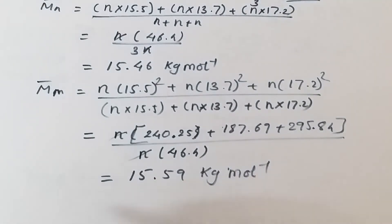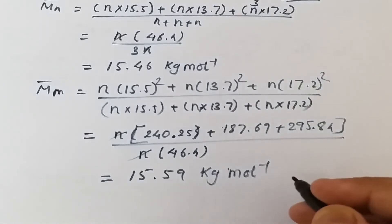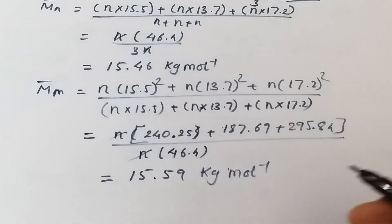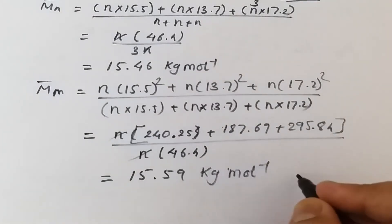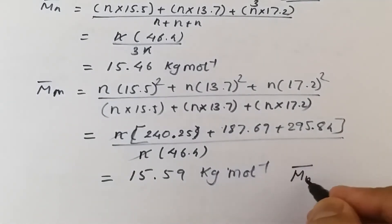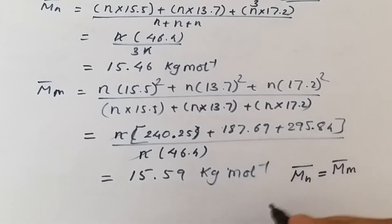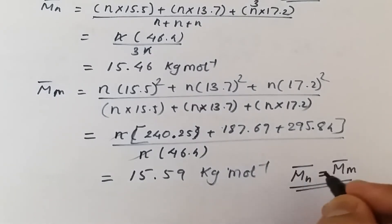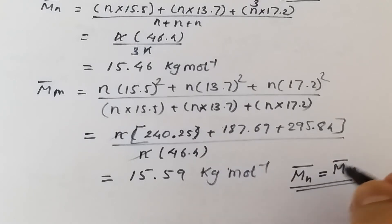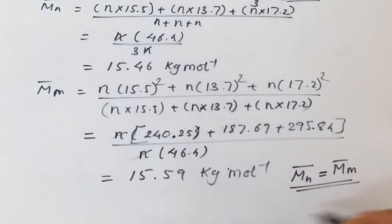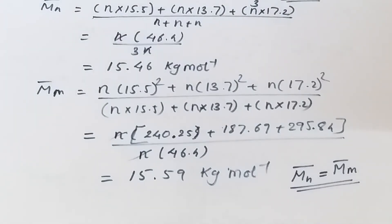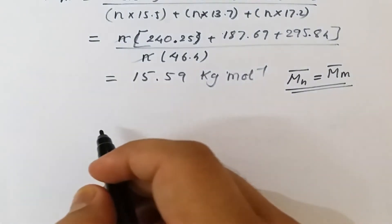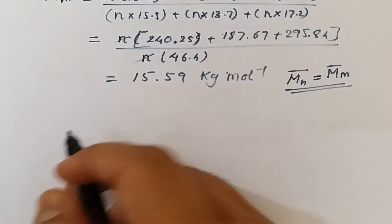One important CSIR NET question: when a polymeric solution is monodisperse, the number average molar mass equals the mass average molar mass. This was asked in both June 2017 and December 2017, so watch out for it — it may be asked again. Moving on to the next problem, which is based on the intrinsic viscosity method to determine molecular weight.